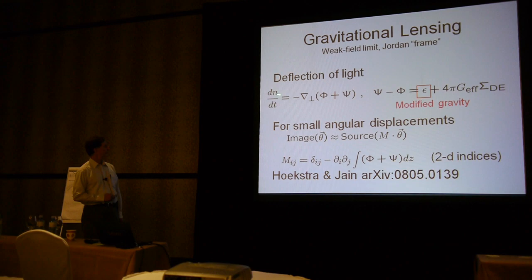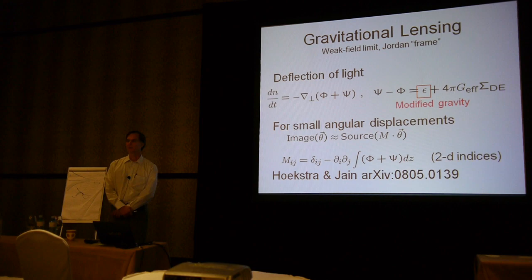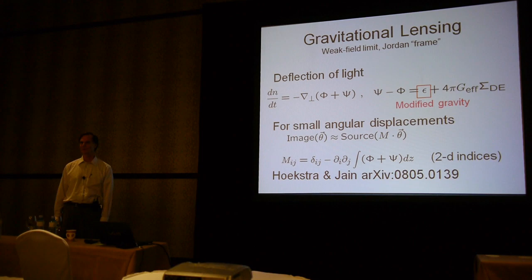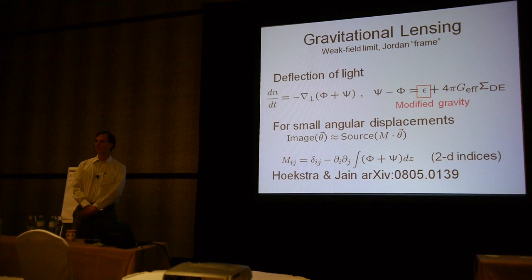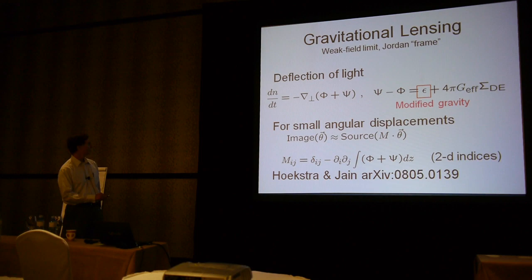The deflection of light in the weak field limit involves a unit vector directed along the gradient of the lensing potential, with the component perpendicular to the propagation direction. It is famously known that the deflection of light differs from the deflection of a massive body moving at the speed of light in Newtonian gravity—the reason being that in the weak field metric, both the time and space parts of the metric are important for relativistic particles, and they both have contributions from the Newtonian and curvature potentials. The sum of these two potentials is the source for lensing.